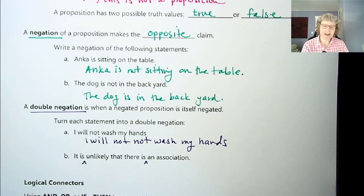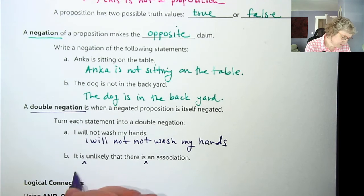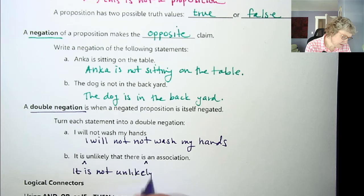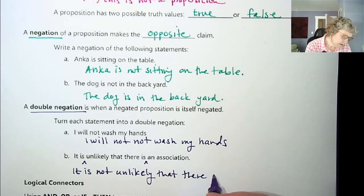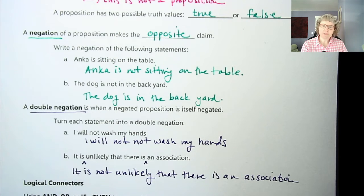Or I could say it's unlikely that there is not an association. So I could also put it right there. And I bet you can even think of another way to do it. So I'm going to write the first way. It is not unlikely that there is an association. We could also make this into a triple negative if we said it is not unlikely that there is not an association. And then it starts getting really confusing, right?